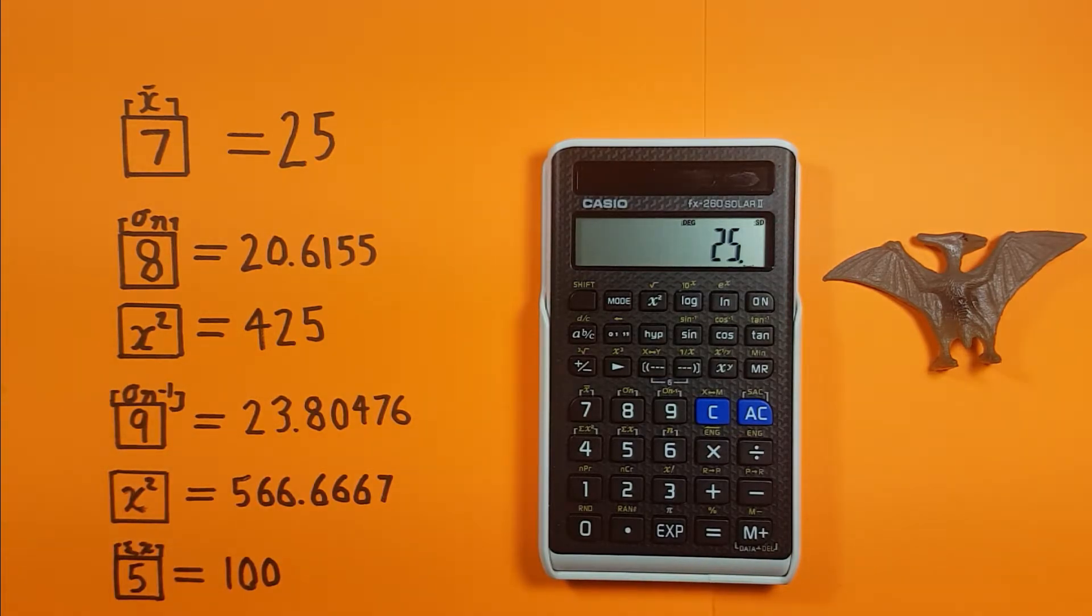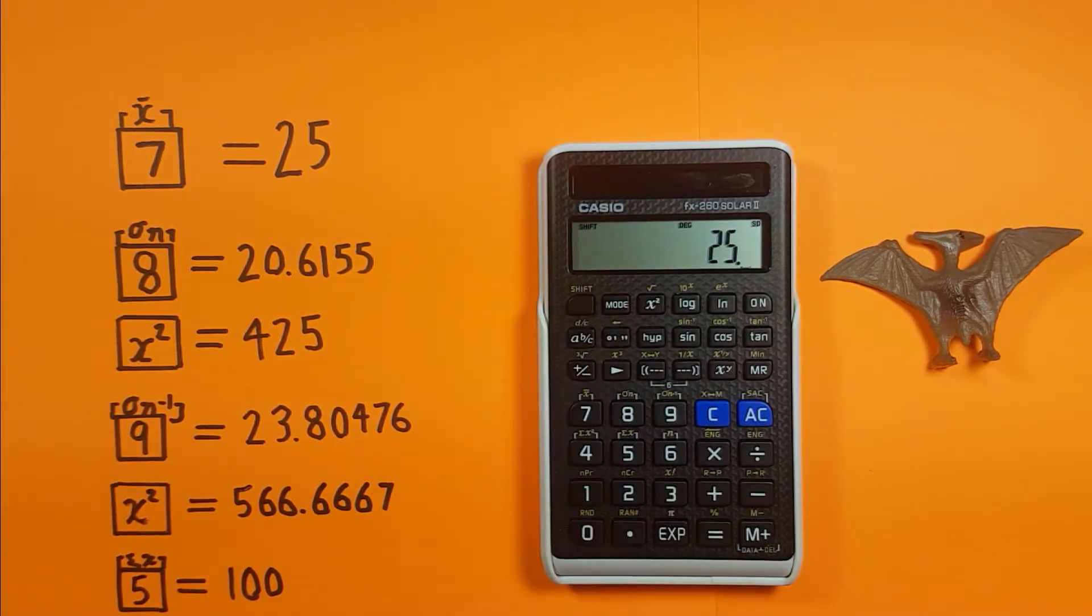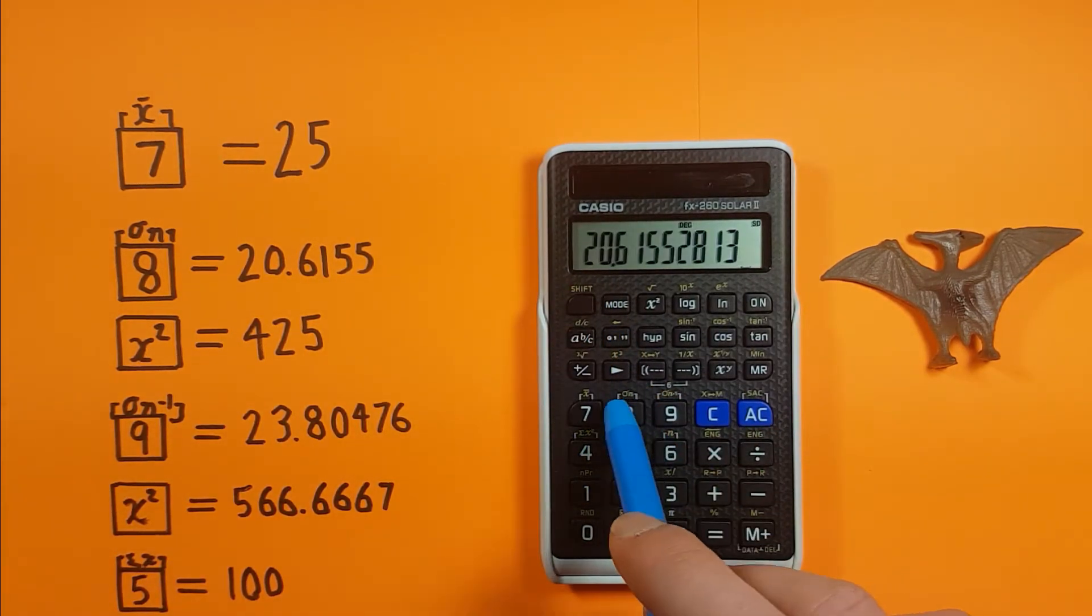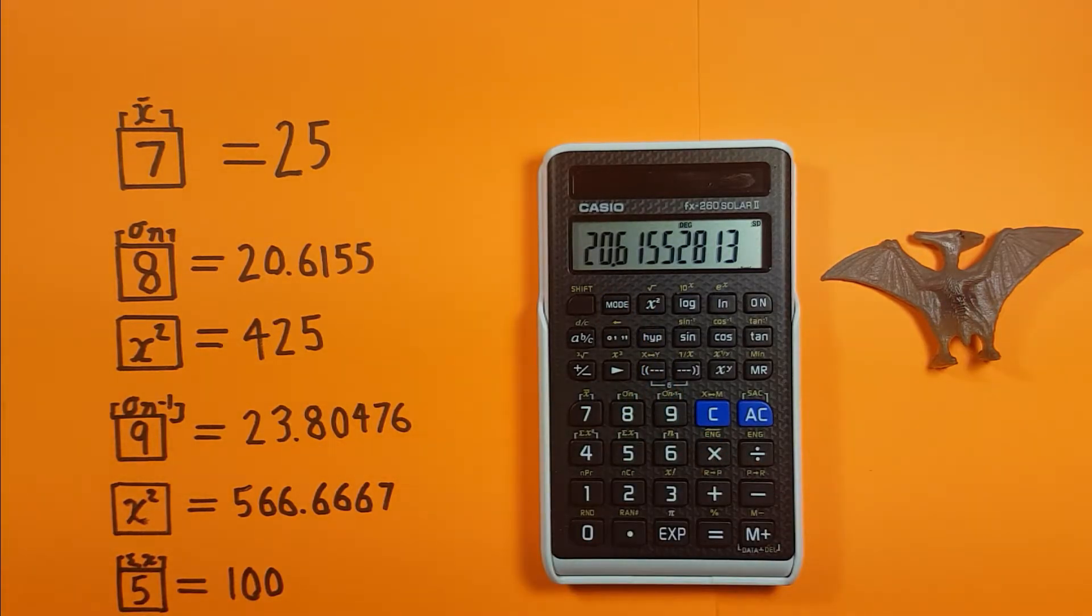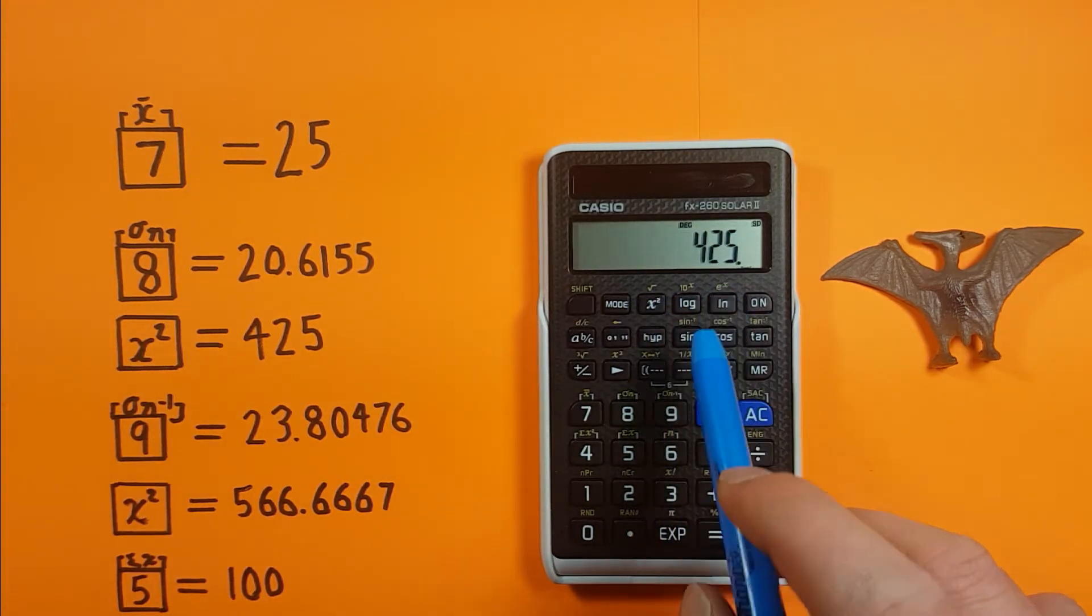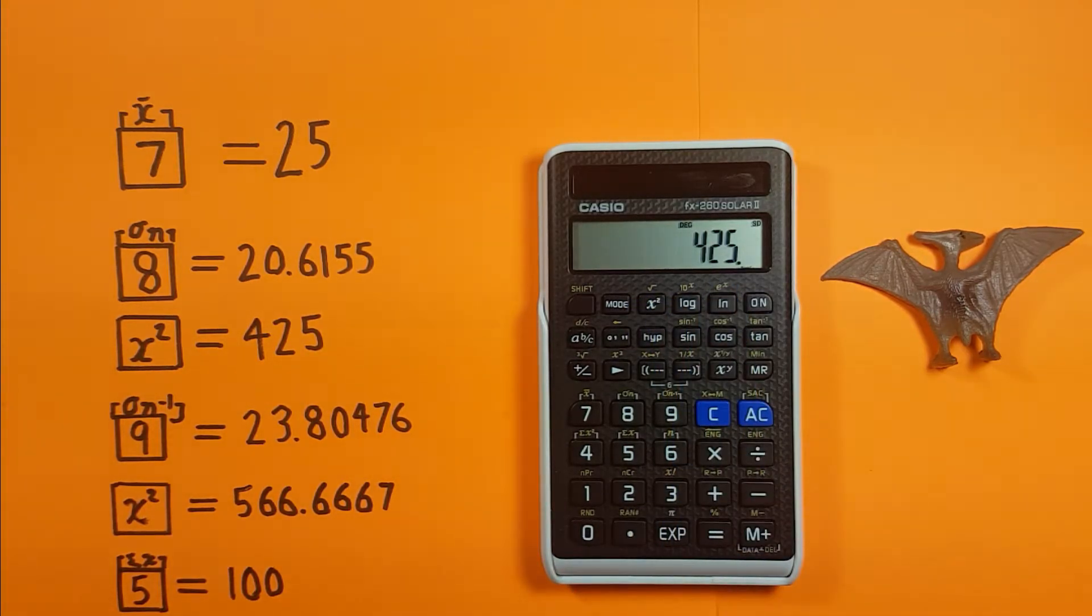The next one we can look at is the population standard deviation. To do this we press shift 8 which is sigma n, and this gives us 20.6155 etc. And if we want to get the population variance all we have to do is square this and there we go we get a variance of 425.